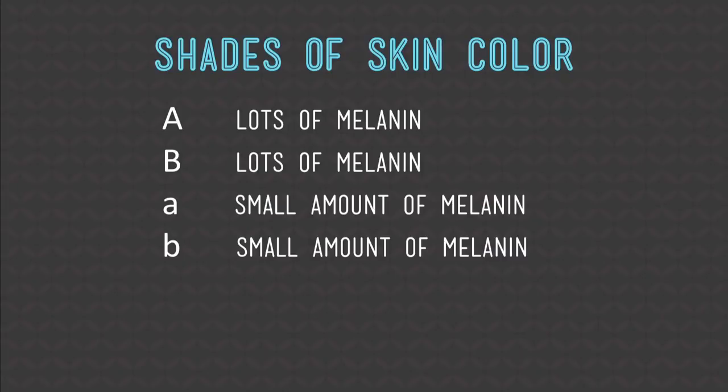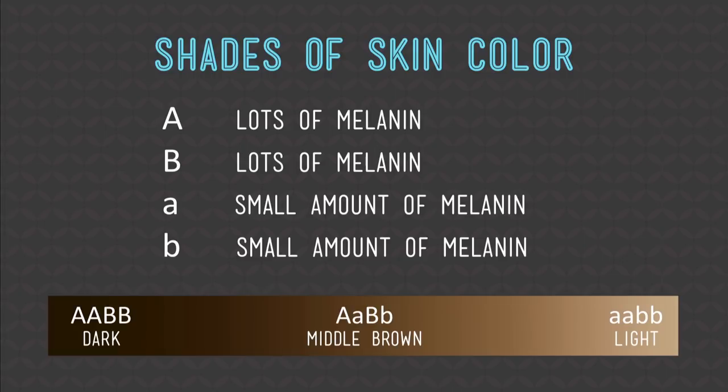Everybody is brown. There's one basic pigment — it's called melanin, two forms of it. It's more complex than this, but this gives you the basic principle idea. If big A and big B mean a lot of melanin, and little A and little B mean a little bit of melanin — if you had all big A's and big B's, you'd have dark skin.